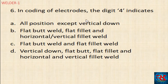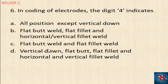In the coding of electrode rods, the digit 4 indicates: all positions except vertical down; flat butt weld, flat fillet and horizontal vertical fillet weld; flat butt weld and flat fillet weld; or vertical down, flat butt, flat fillet and horizontal vertical fillet weld.